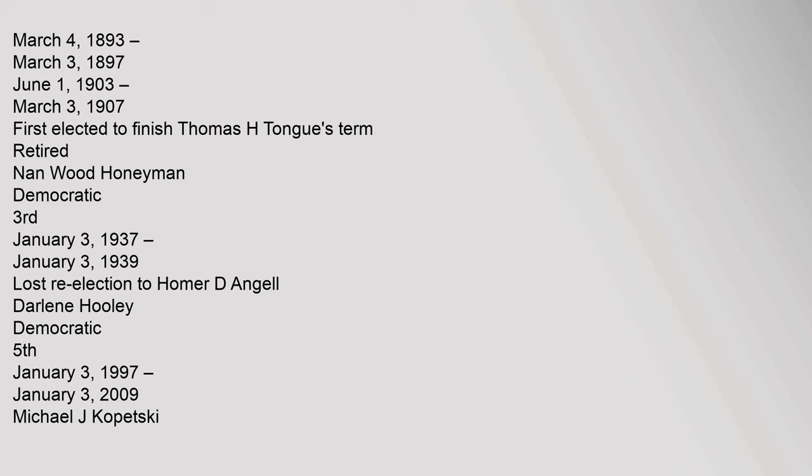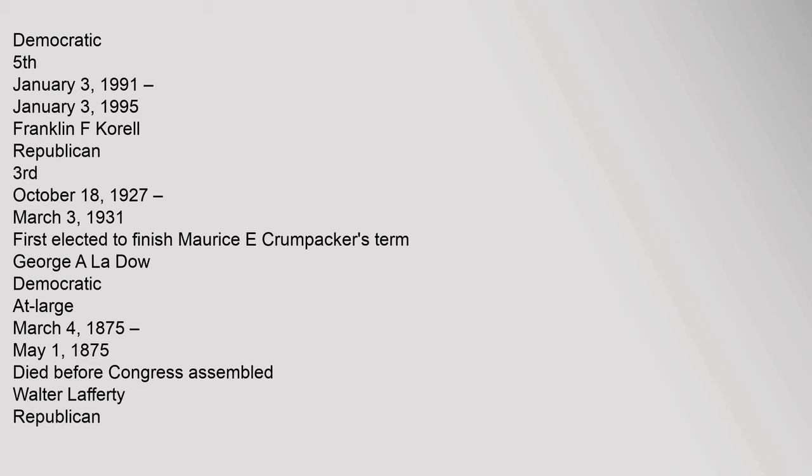Michael J. Kopetsky, Democratic, 5th, January 3, 1991 to January 3, 1995. Franklin F. Korell, Republican, 3rd, October 18, 1927 to March 3, 1931, first elected to finish Maurice E. Krumpacher's term.